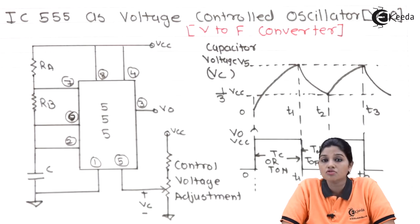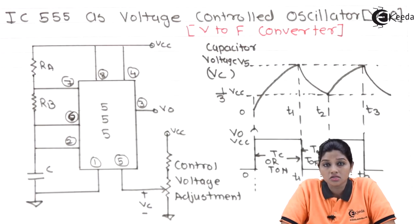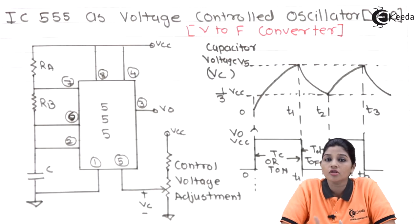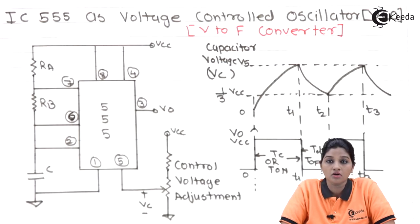Moving towards the voltage control oscillator: a voltage control oscillator (VCO) is basically a circuit which produces an output frequency proportional to the input voltage. So as we vary the input voltage, the output frequency changes. Therefore, the voltage control oscillator is also called a voltage-to-frequency converter.